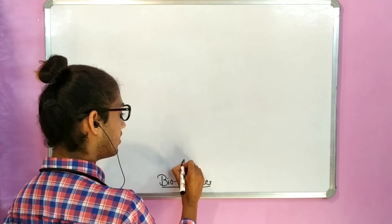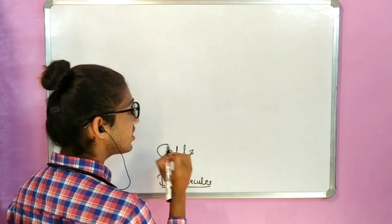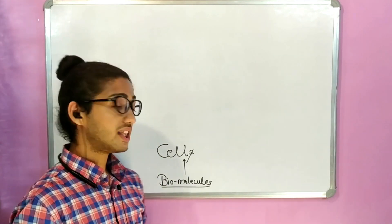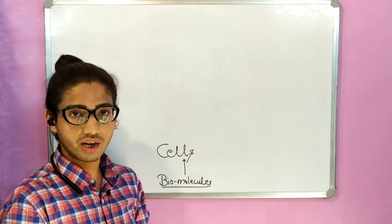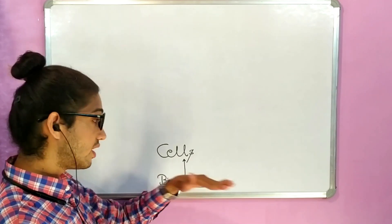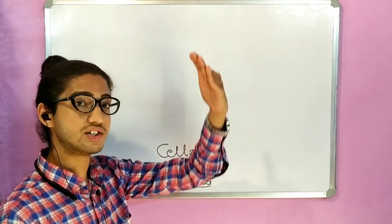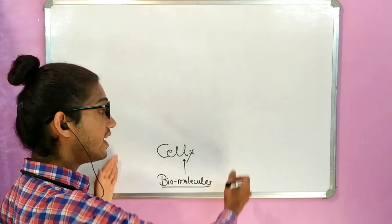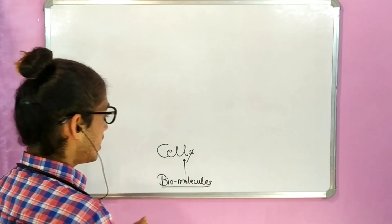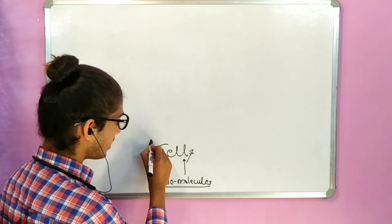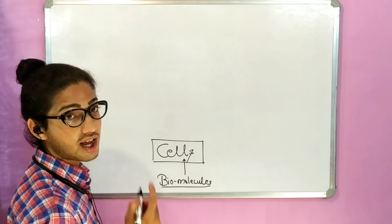Cell is another level of structural organization. These molecules will ultimately form the entire structure of the organism, and we are learning it level by level — first level, second level, third level — that is why I'm calling it structural organization. The cell is the basic fundamental structural and functional unit of life.